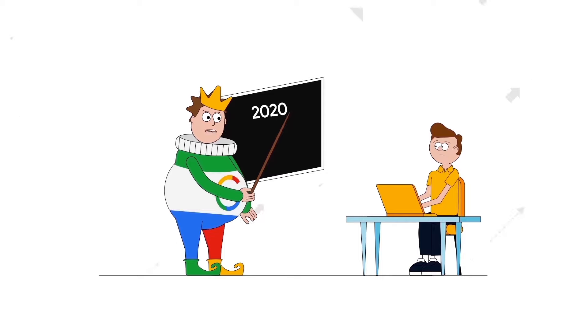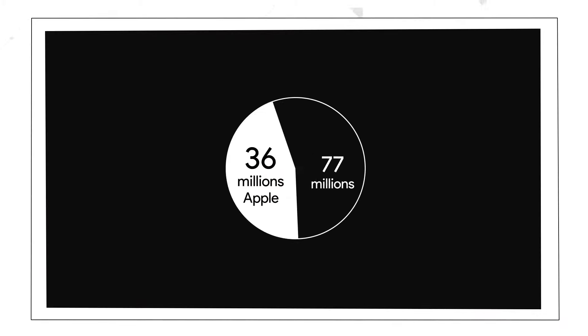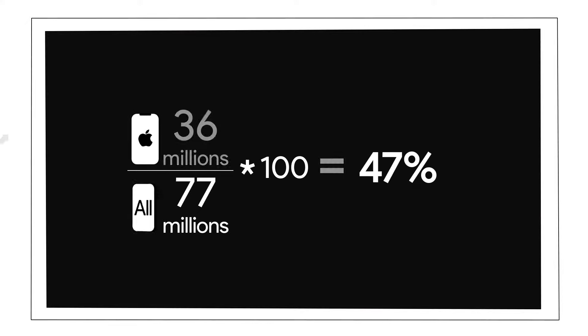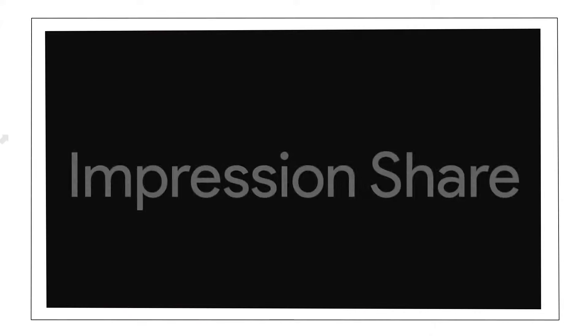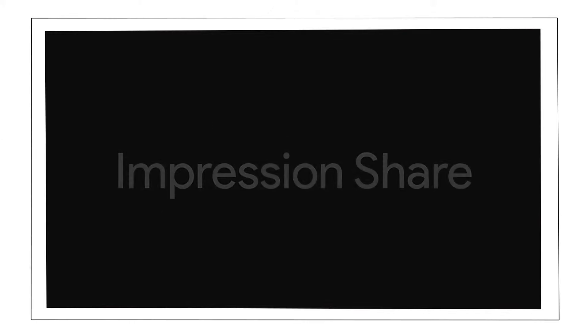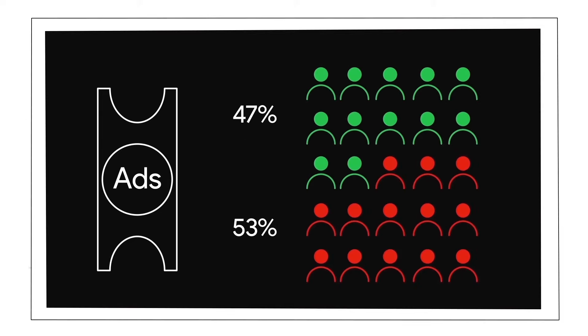So what's impression share really about? Let's use an analogy. In 2020, 77 million smartphones were sold in the United States — that's the market, a big one. Out of those 77 million smartphones, Apple sold 36 million of them. 36 million out of 77 million is 47 percent — that's called market share. Just like market share, impression share is the percentage of impressions your ads received against the total number of impressions available. Say your ads showed up 47 times out of 100 times your keywords and targeting matched what was searched — that means you got an impression share of 47 percent.